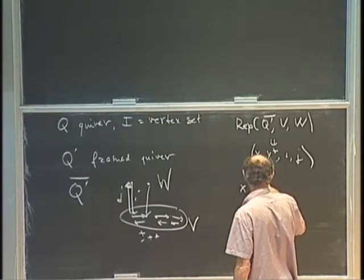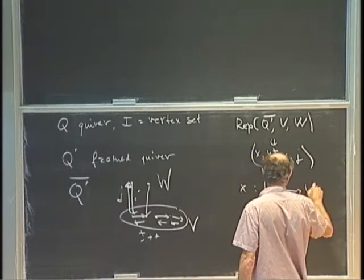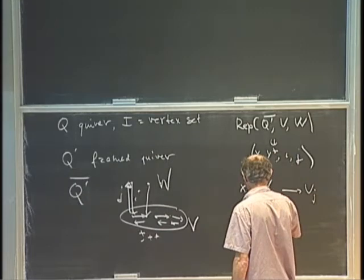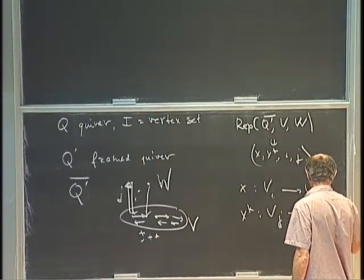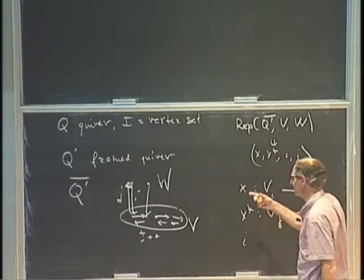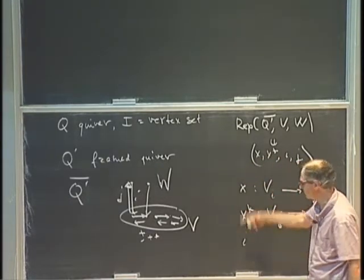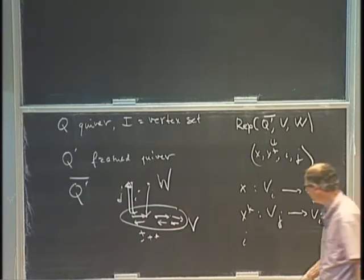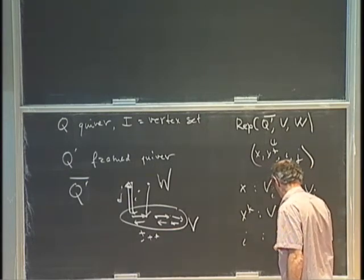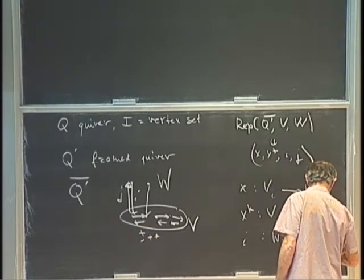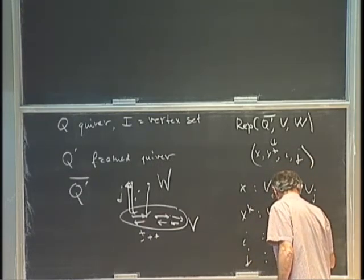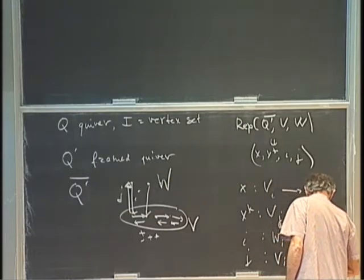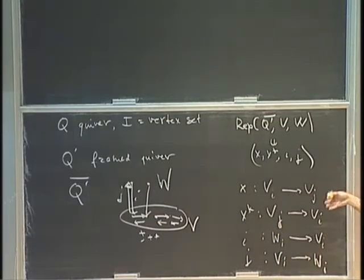To be explicit: X is a map from some V_i to V_j; X star is a map from V_j to V_i. Then I is a map from W_i to V_i — this is Nakajima's notation — and J is a map from V_i to W_i. So we have lots of vertices and edges and lots of such maps.